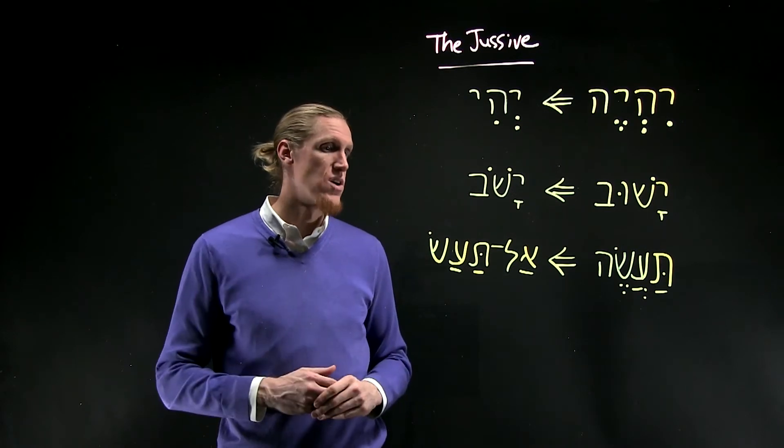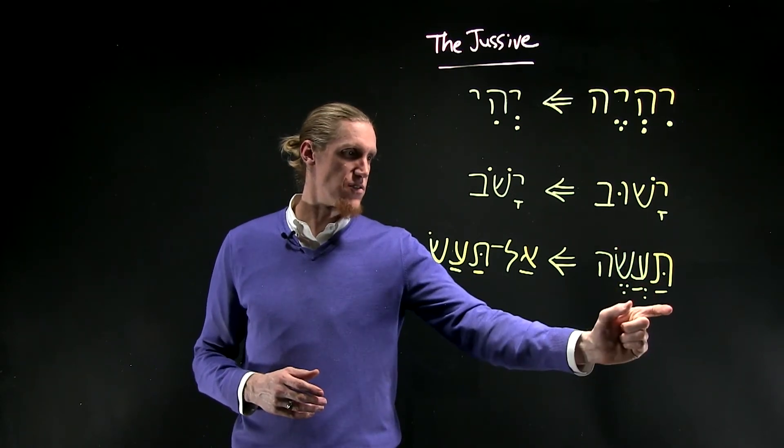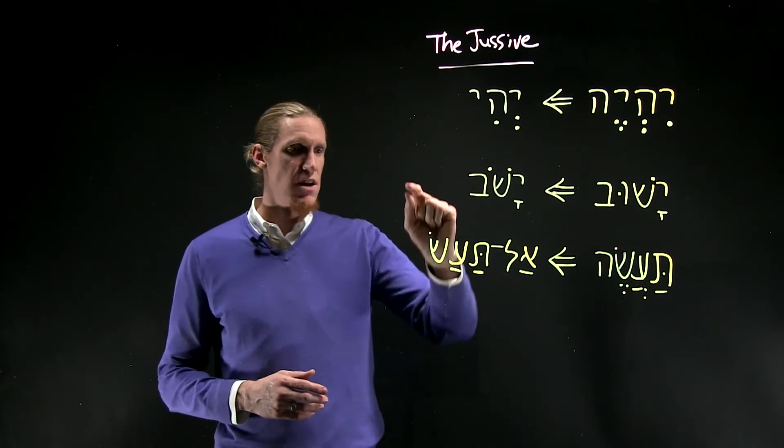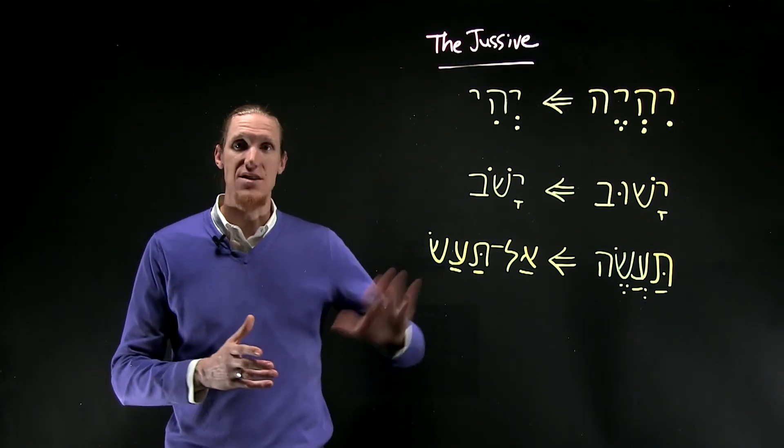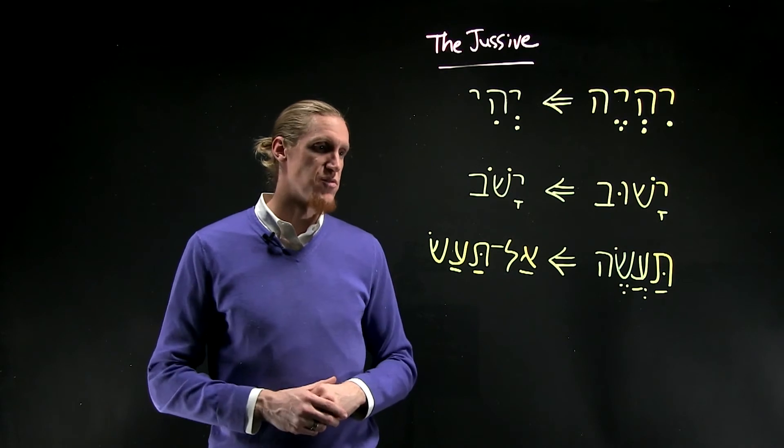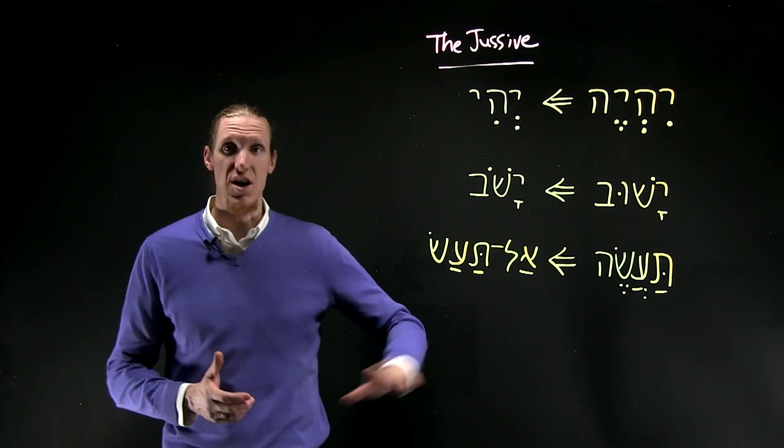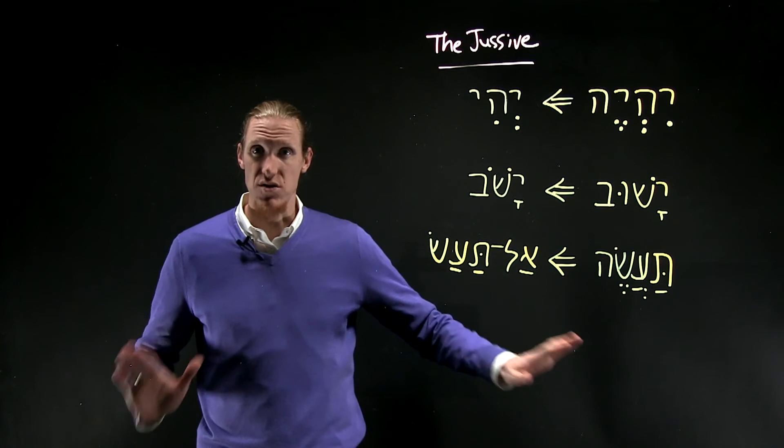And the shortened jussive form in the prohibition is al-ta'as. So you see the first two vowels remain and the he falls off the end, so you get that shortened form. Do not do. This comes from Genesis 22, the angel saying to Abraham, do not do anything to the boy, don't touch him.